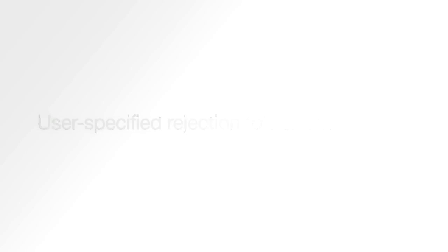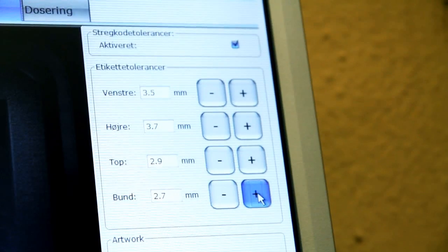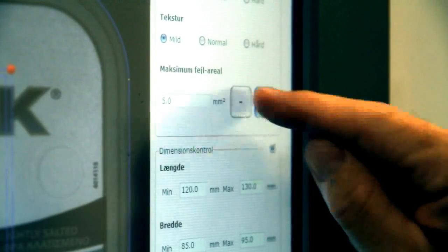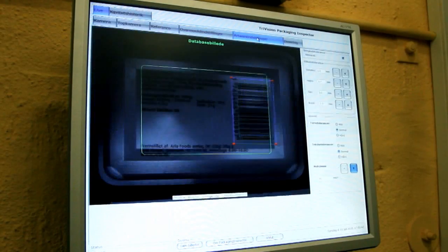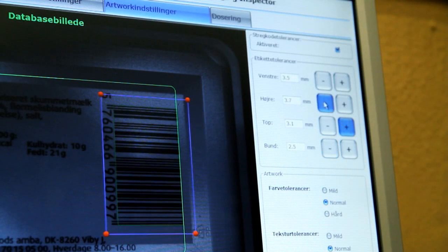You get user-specified tolerances for rejection criteria such as size of overmold error, contrast of overmold error, size of label misplacement, size of under- and overdosing, tolerances for length and width of the products, and evaluation of barcodes.